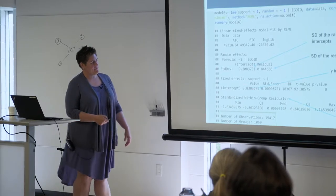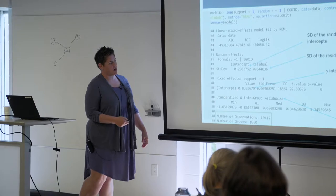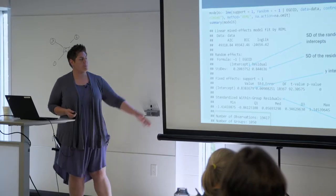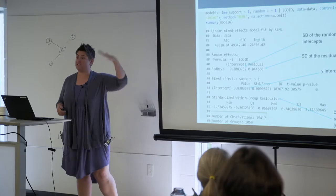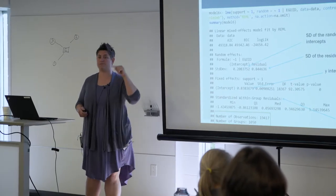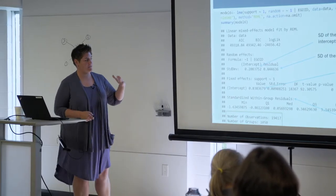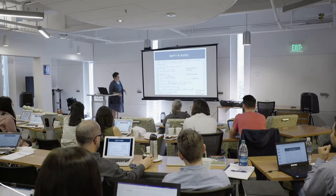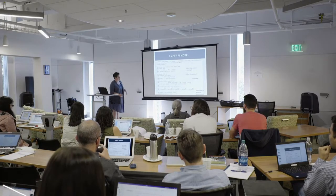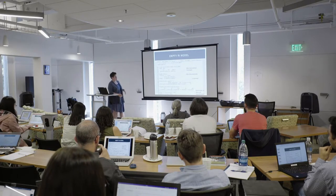Down here we have the fixed effects — this is our overall intercept, based on a weighted average of all of the random intercepts. Remember, it's not based on the observations anymore; it's based on the random intercepts. And then we have the distribution of the residuals. This is a null model, so there's nothing in here.